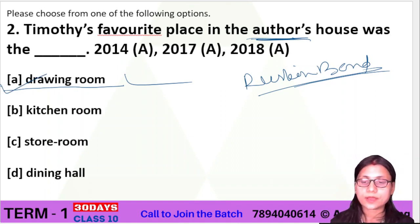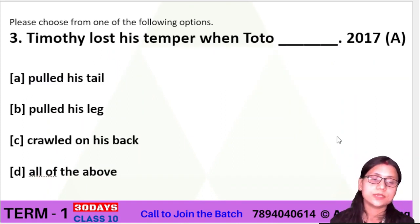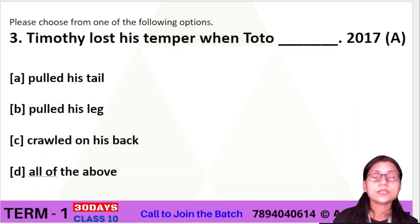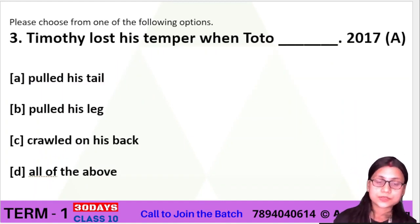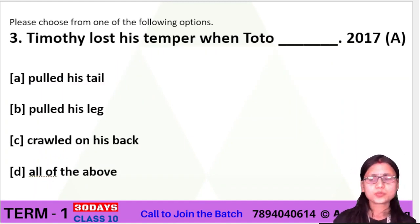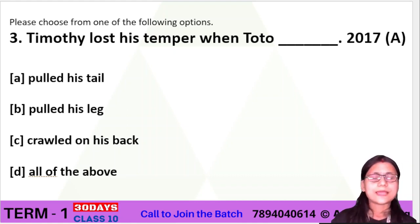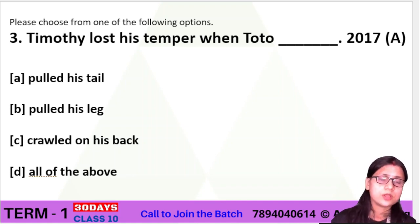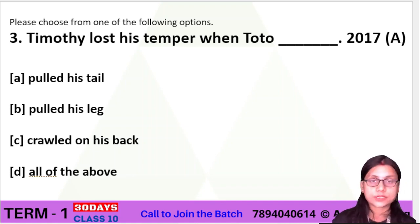Now question number 3: 'Timothy lost his temper when Toto dashed.' As we know, Toto is a monkey. This question appeared in the 2017 annual examination.